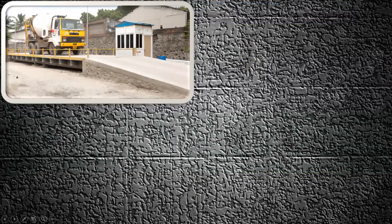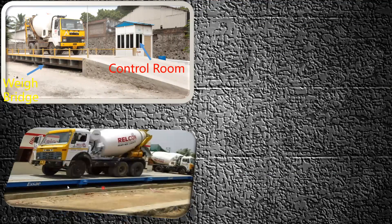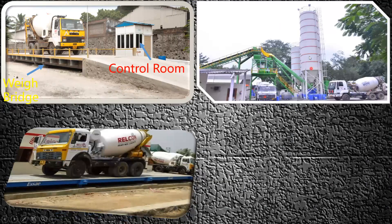Once the concrete is ready, we bring it to the construction site with the help of a transit mixer. When the transit mixer arrives, we weigh the concrete using a weigh bridge with a control room. Based on the density of the concrete, we can determine how much concrete is in the transit mixer. This is a quality test done in big construction projects.